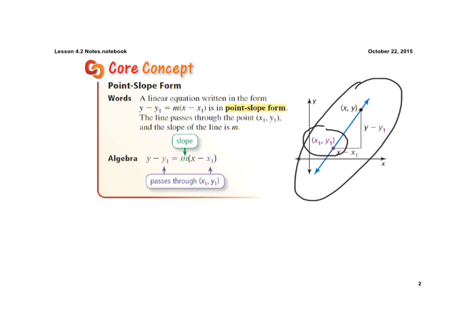And now once we have it in this form, we can keep it in this form or we can eliminate parentheses, solve for y, and put it in slope-intercept form. And that's what we'll work on next here.